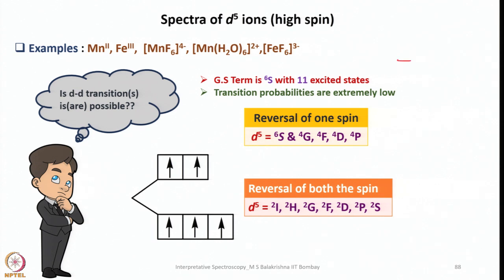If you consider electronic rearrangement in these high spin complexes and recall the spin selection rule of delta S equals 0, these transitions are forbidden because if any electron you promote will be going with upward spin, resulting in 2 spins with the same value of plus half. That's why they are all spin forbidden transitions. The ground term is 6S with 11 excited states, so transition probabilities are extremely low.